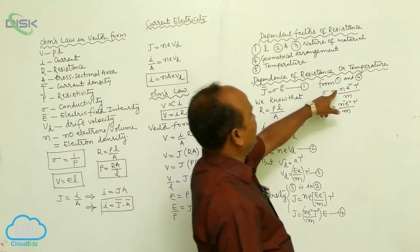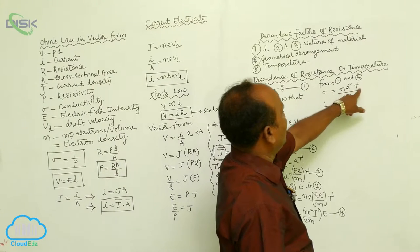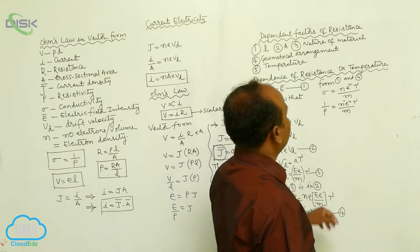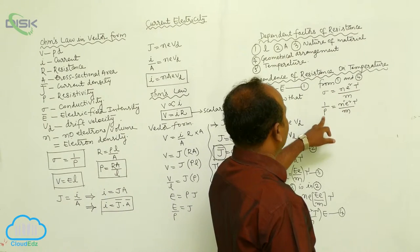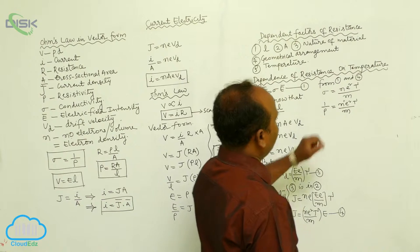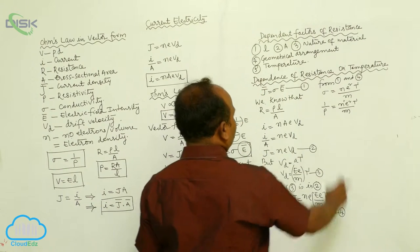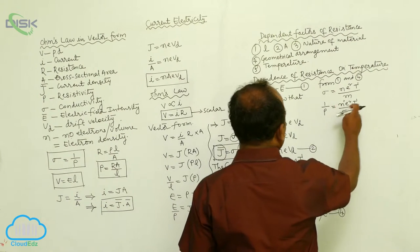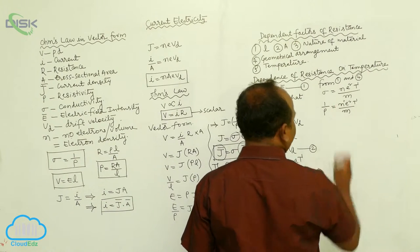Sigma equals n e squared tau by m. Since sigma equals 1 by rho, we can write n e squared tau by m.